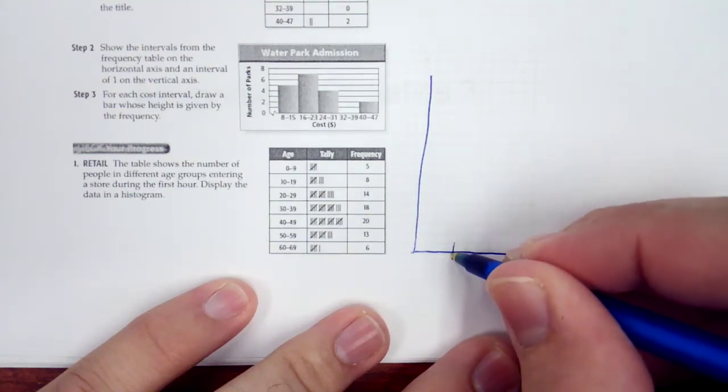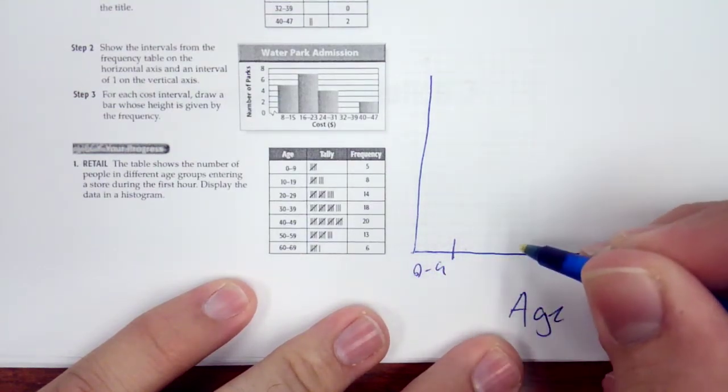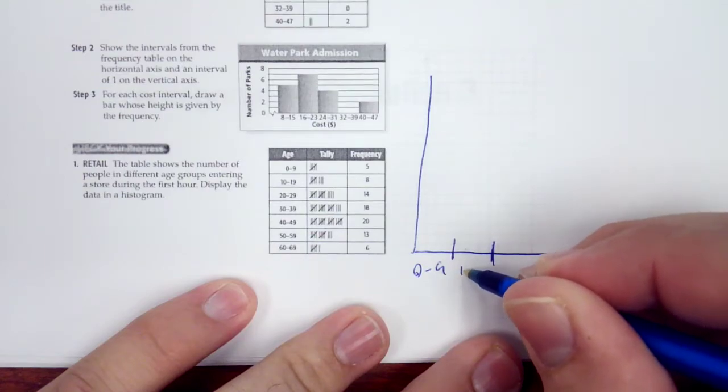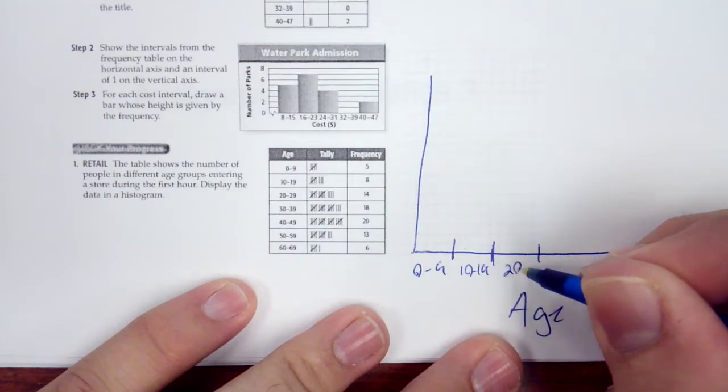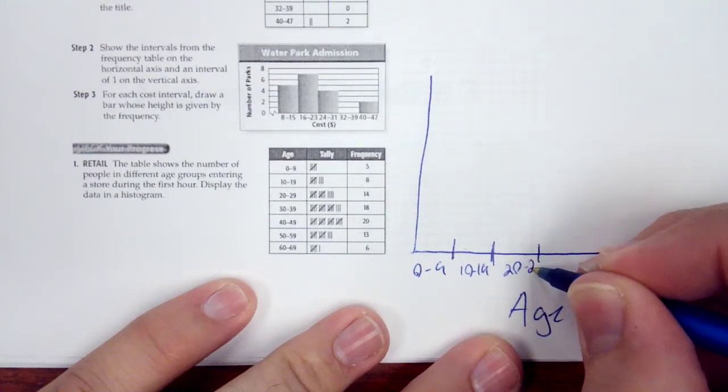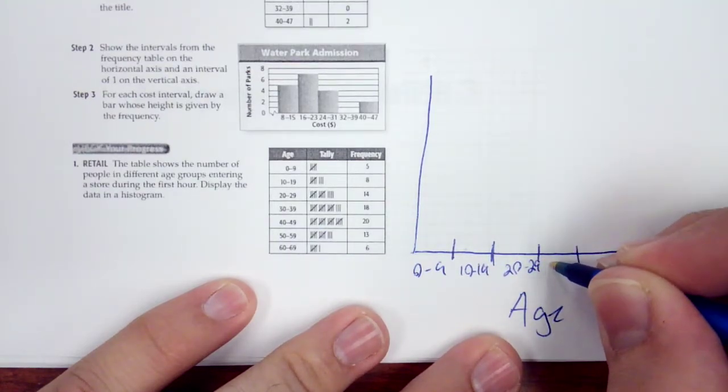And then we're going to have 0 to 9, 10 to 19, 20 to 29, 30 to 39.